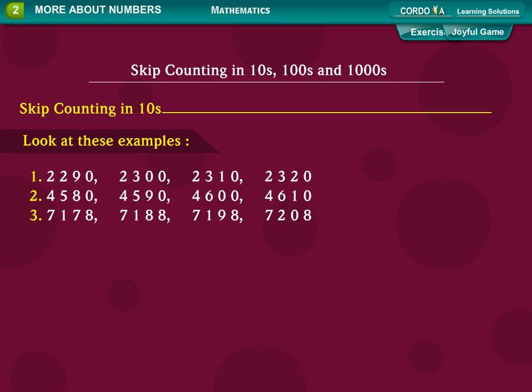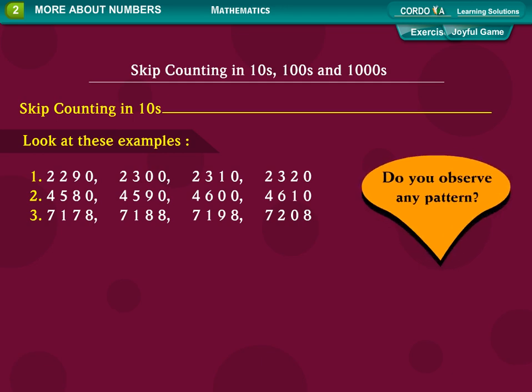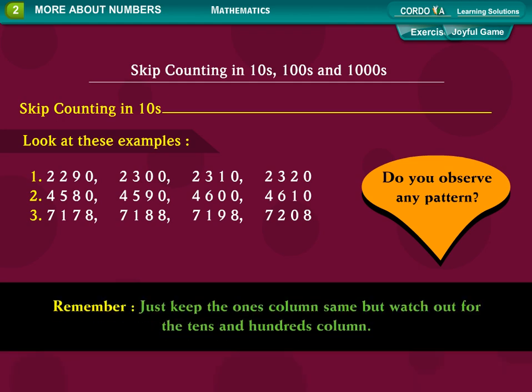Skip counting in 10s. Look at these examples: 4,580, 4,590, 4,600, 4,610. 7,178, 7,188, 7,208. Do you observe any pattern? Remember: just keep the ones column same, but watch out for the tens and hundreds column.